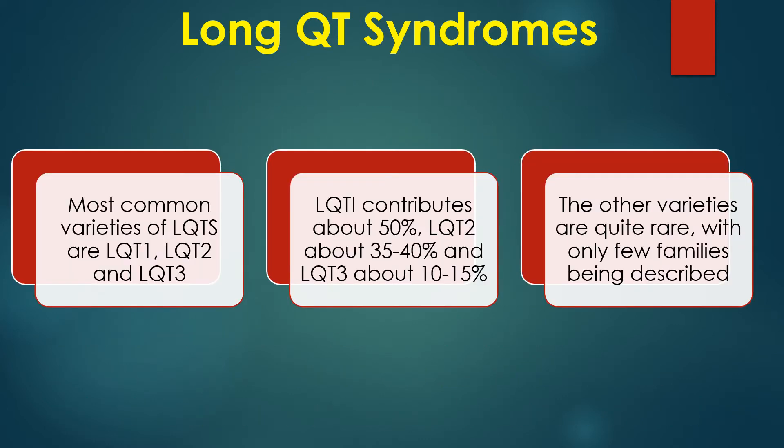The most common varieties of LQTS are LQT1, LQT2, and LQT3. LQT1 contributes about 50%, LQT2 about 35–40%, and LQT3 about 10–15%. The other varieties are quite rare, with only a few families described.